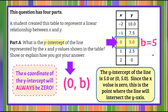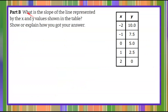Let's move on to Part B: What is the slope of the line represented by the x and y values shown in the table? We need to show or explain how we get our answer. Please pause, solve Part B, and then come back to see my solution. Welcome back. Here we're finding the slope of the line represented by this table. I'm going to show you how to do this in two different ways.